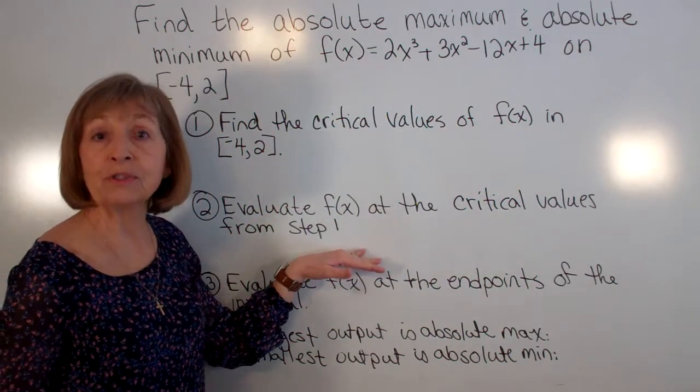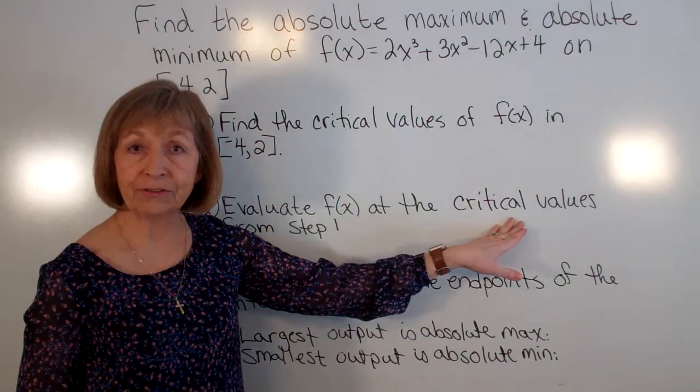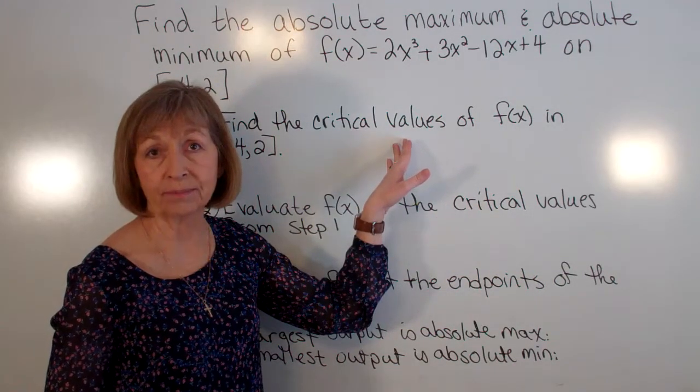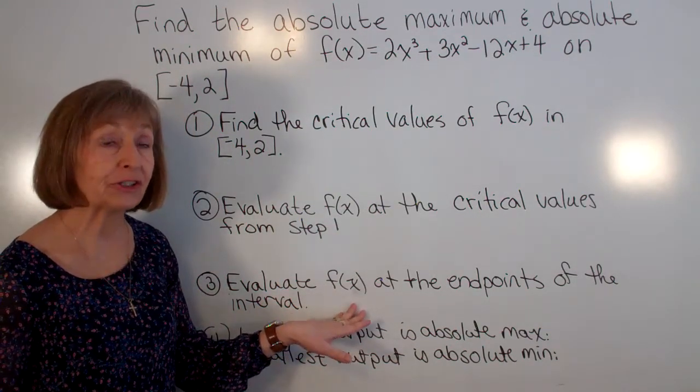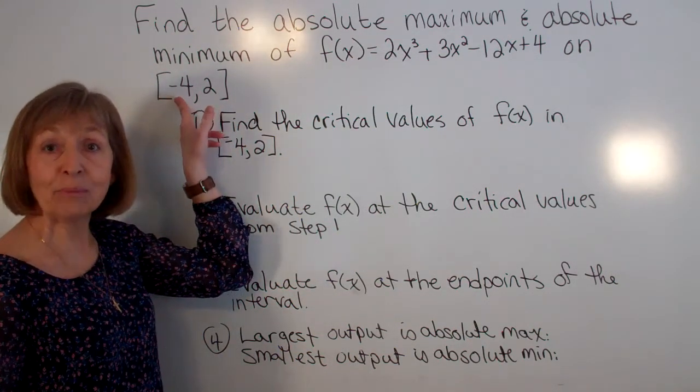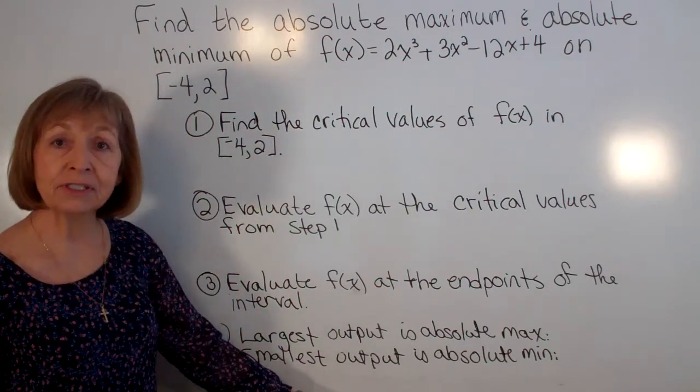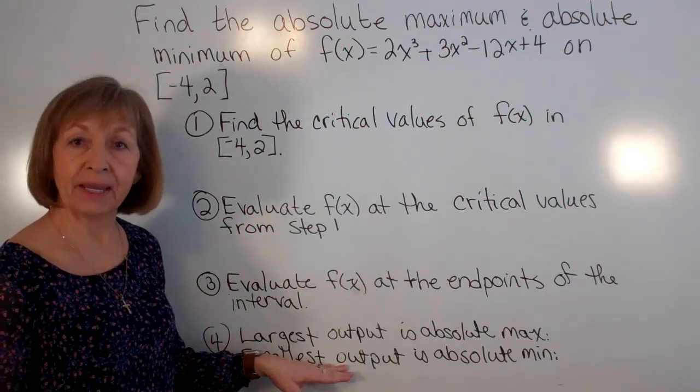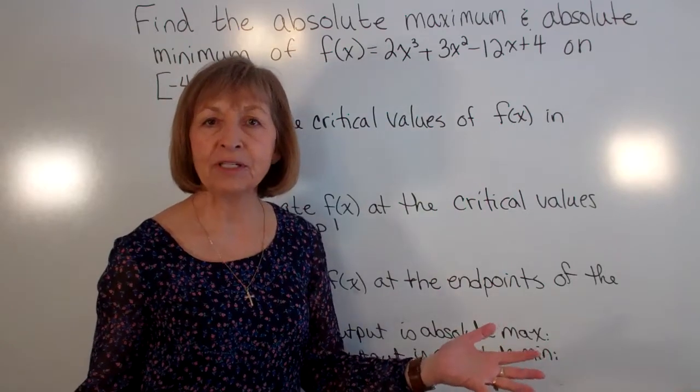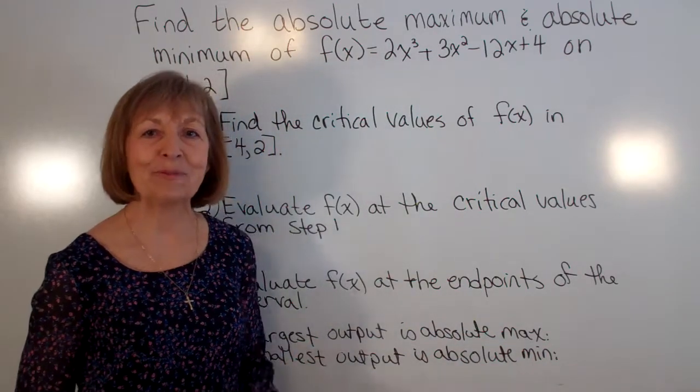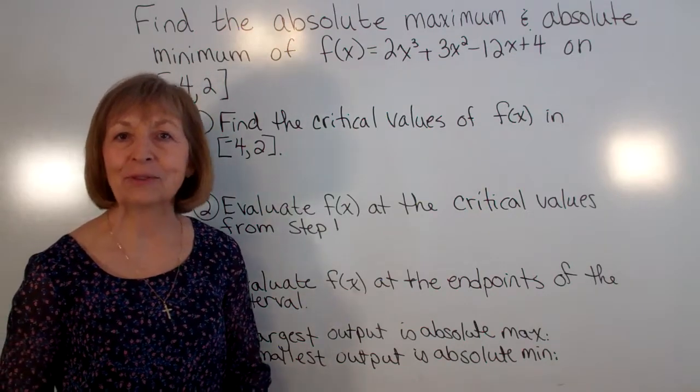Next up we're going to evaluate our function at the critical values we found in step one. Then in step three we're going to evaluate our function at the endpoints of our interval. And then in the fourth step we compare the outputs we got from step two and step three. The biggest output wins for the absolute max and the smallest output wins for the absolute min.